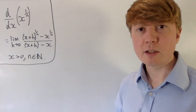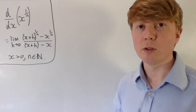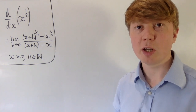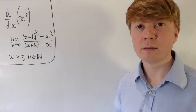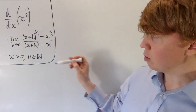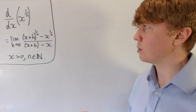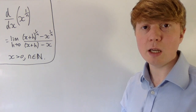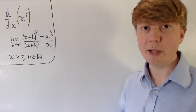So we're going to differentiate x to the 1 over n from first principles, where n is a positive integer, and here x has to be positive, so that x to the 1 over n is well defined. Our most natural approach here might be to use the binomial theorem and look at the series expansion of x plus h to the 1 over n. The approach we're going to use doesn't include any infinite series, so it uses more elementary tools.